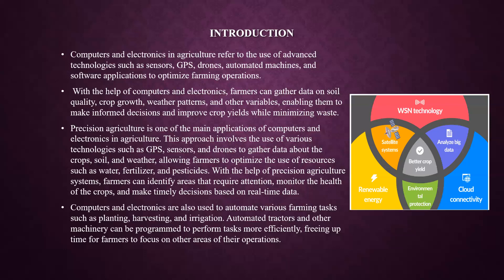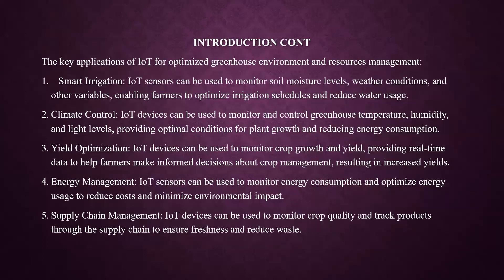Computers and electronics are also used to automate various farming tasks such as planting, harvesting, and irrigation. Automated tractors and other machinery can be programmed to perform tasks more efficiently, freeing up time for farmers to focus on other areas of their operations.